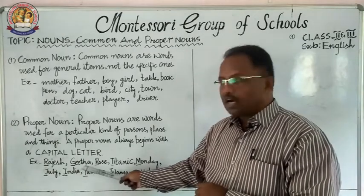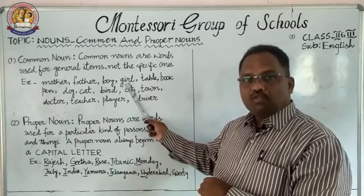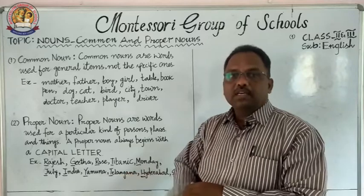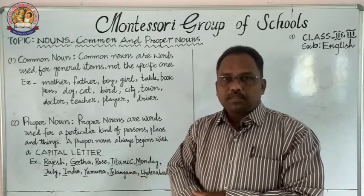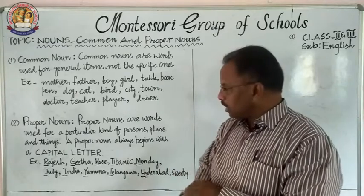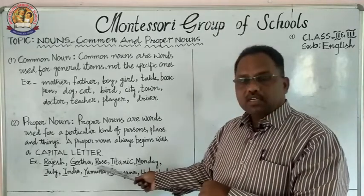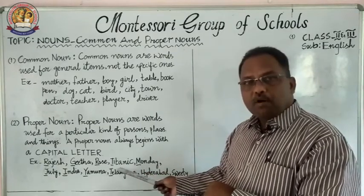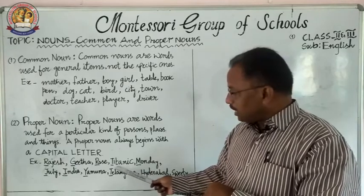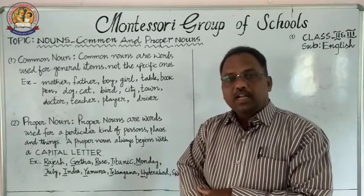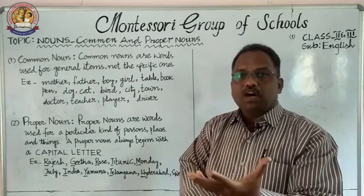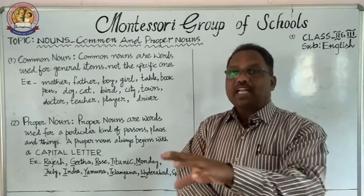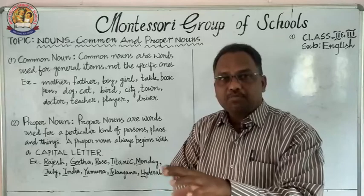Similarly, girl is a common noun. When this girl has a name — for example, Gita — then Gita is a proper noun. Rose is a proper noun. Titanic is a proper noun — it is the name of a ship. Ship is a common noun; when we call the ship by the name Titanic, that Titanic is a proper noun.